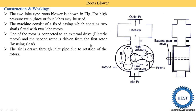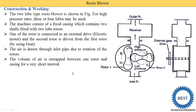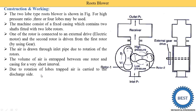The air is drawn through an inlet pipe due to the rotation of the rotors — this is the inlet side. When the rotor starts to rotate, air from the atmosphere comes inside the casing. The volume of air is entrapped between one rotor and the casing for a very short interval. The air enters the compressor and is trapped between one rotor and the casing, then with the lob it moves and comes to the discharge side.